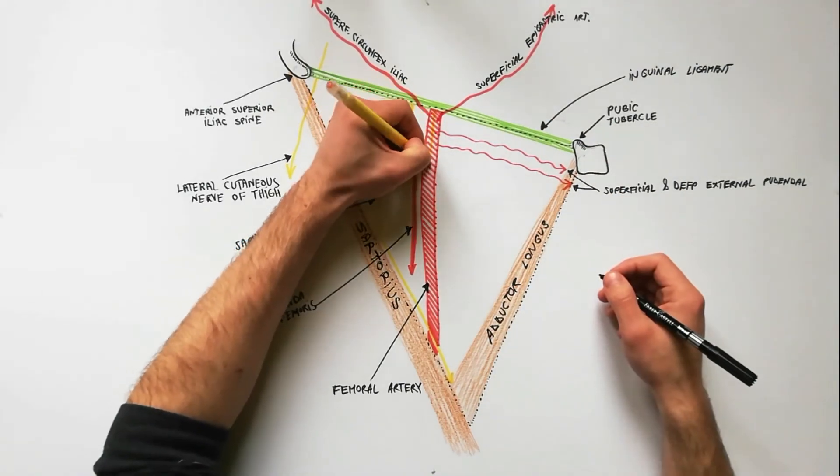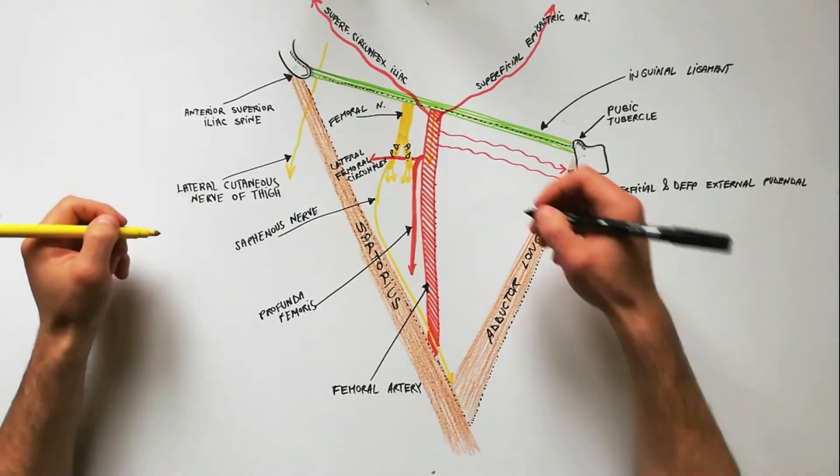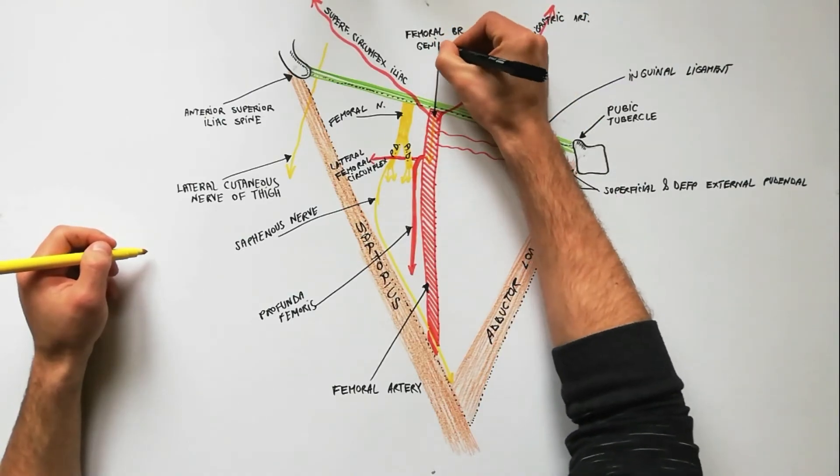Anteriorly to the femoral artery runs down the femoral branch of the genitofemoral nerve.